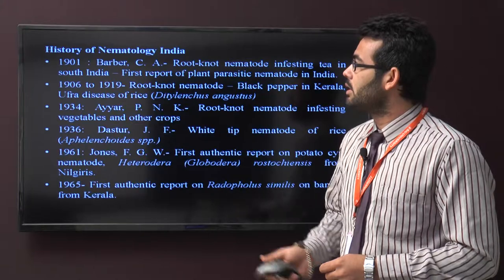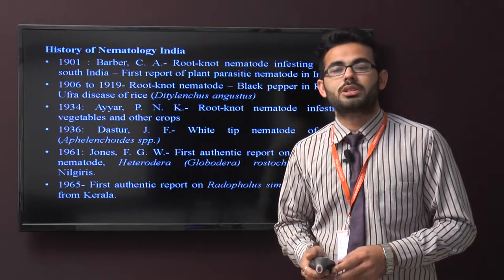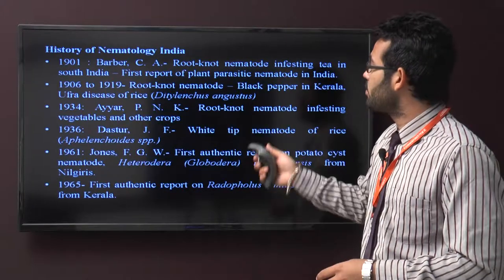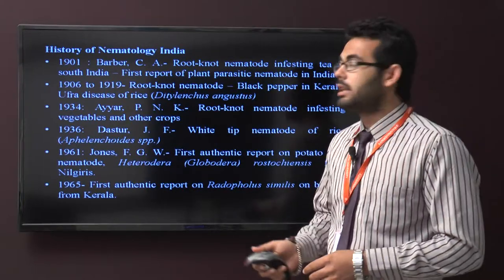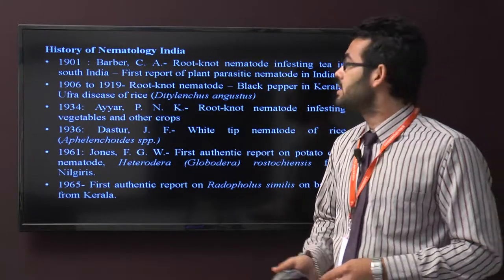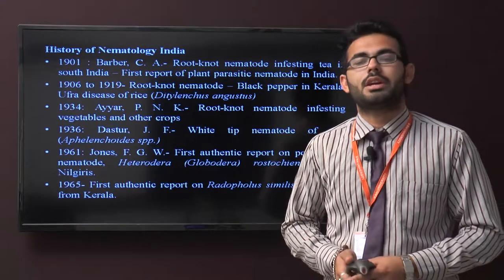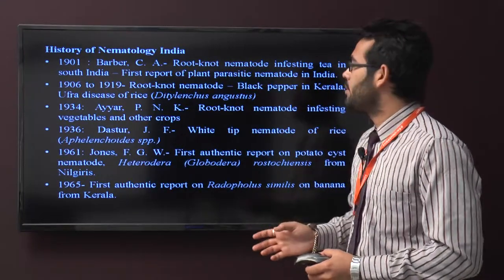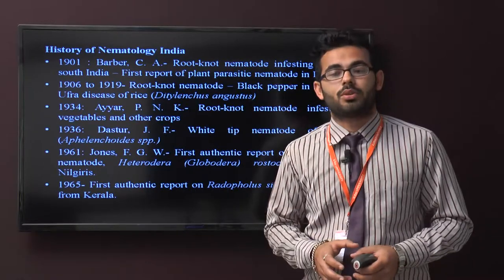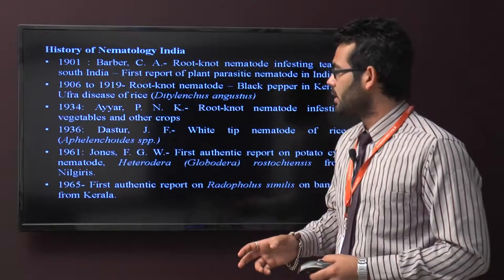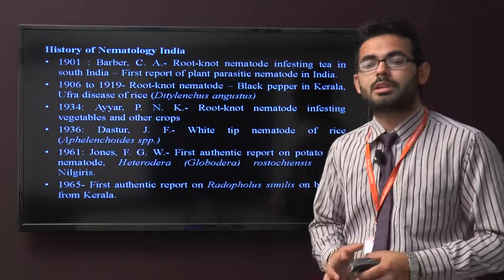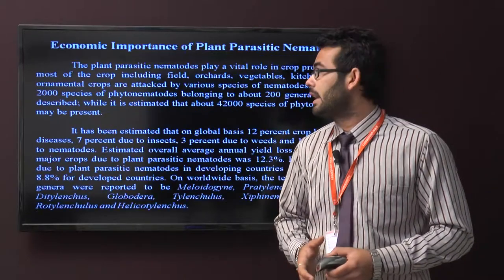Now some history of nematodes in India. In 1901, Barber C.A. discovered the root-knot nematodes infesting tea in South India, the first reported plant parasitic nematodes in India. Root-knot nematodes also reported on black pepper in Kerala and Ufra disease in rice. Then ICAR discovered root-knot nematodes infesting vegetables and other crops. Duster discovered the white-tipped nematode of rice, and in 1965, the first authentic report of Radopholus similis on banana from Kerala.